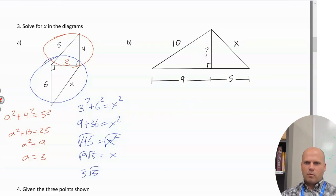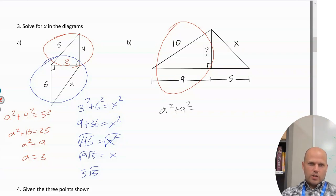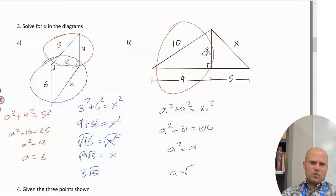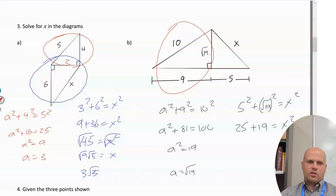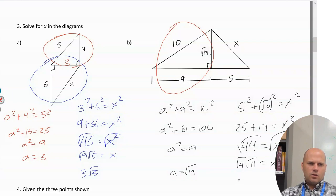For the next chained triangle problem: a² + 9² = 10², giving a² + 81 = 100, so a² = 19, a = √19. It's actually best not to simplify that because we'll square it anyway. Then 5² + (√19)² = x², which gives 25 + 19 = 44 = x², so x = √44 = 2√11, since √4 × √11 = 2√11.